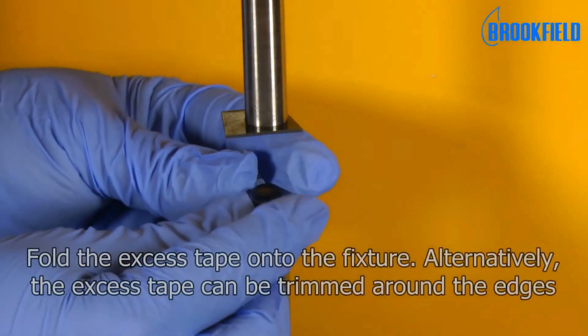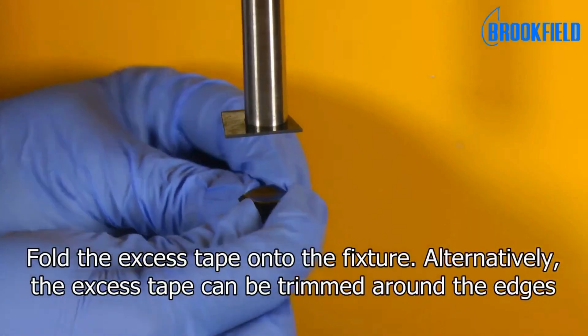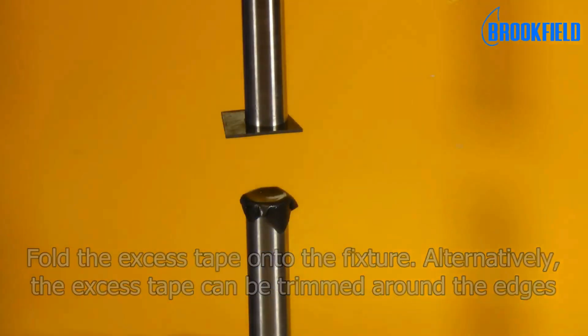Fold the excess tape onto the fixture. Alternatively, the excess tape can be trimmed around the edges.